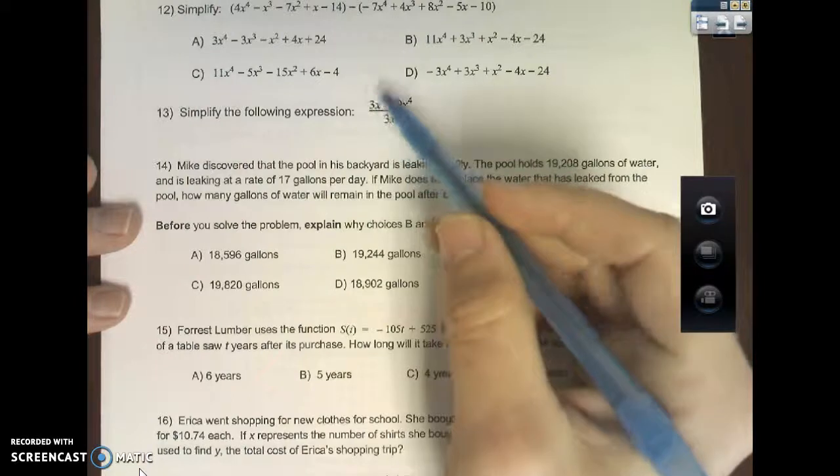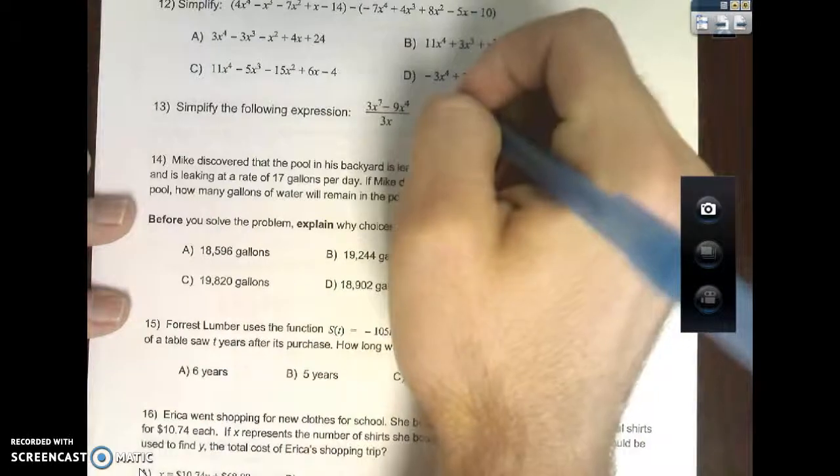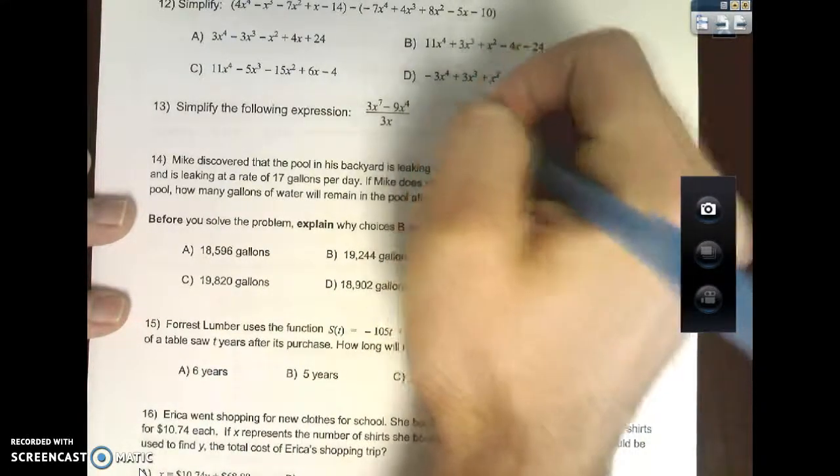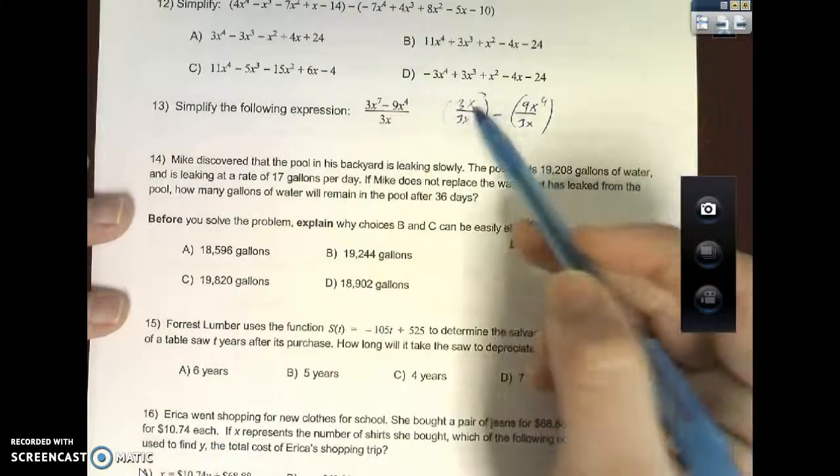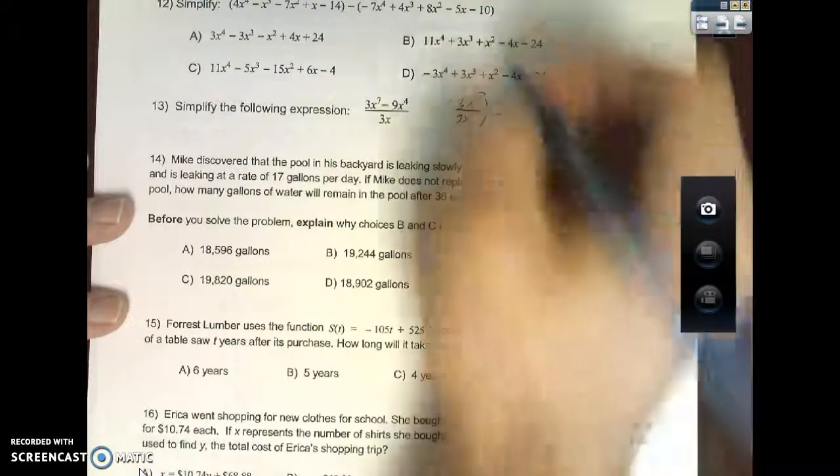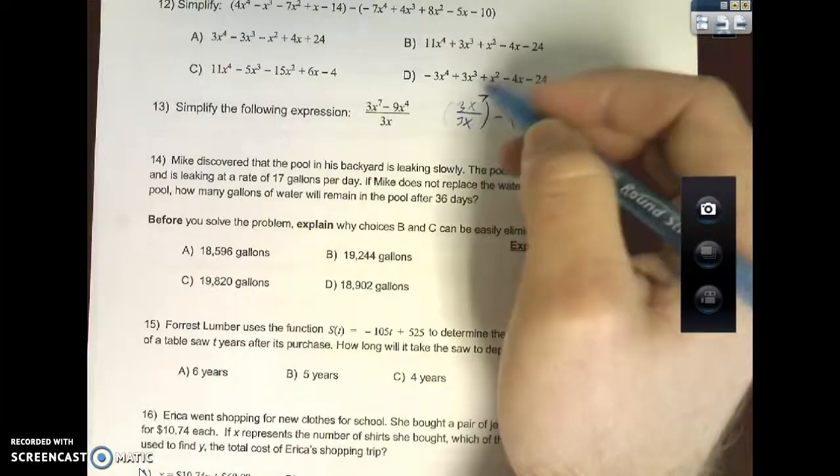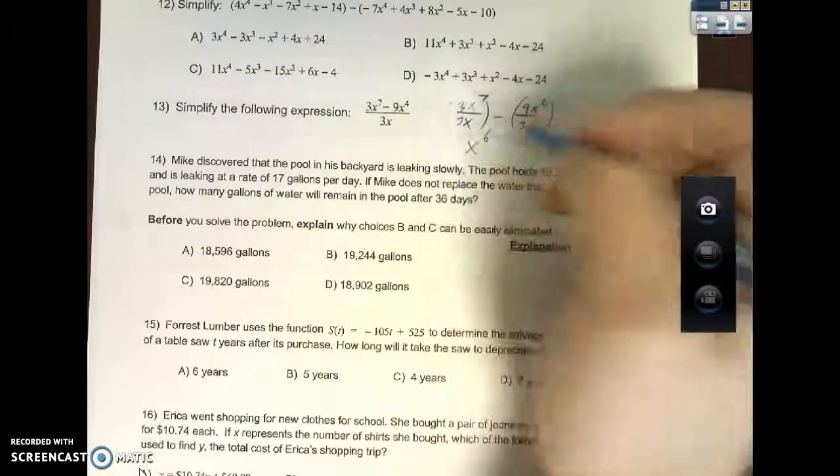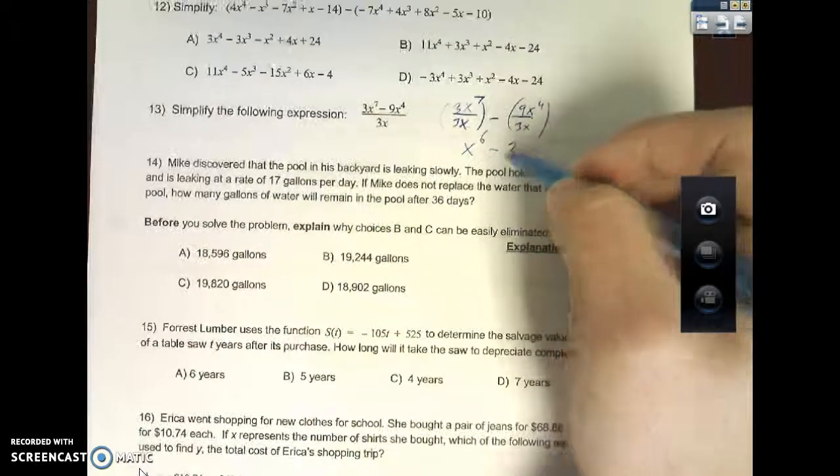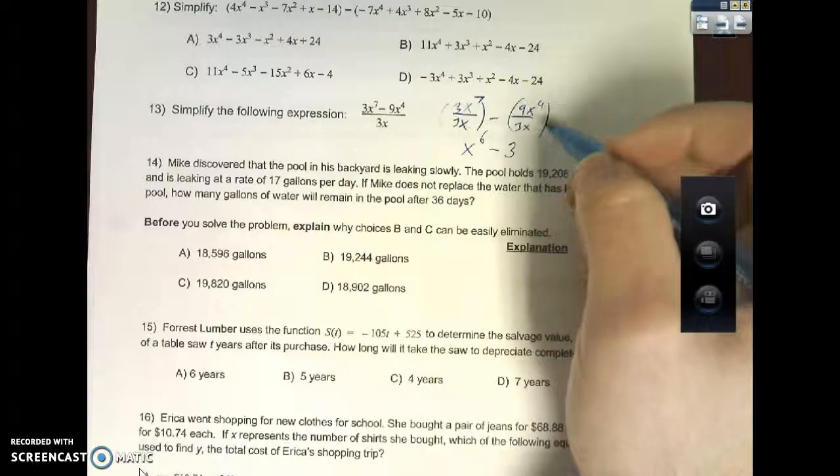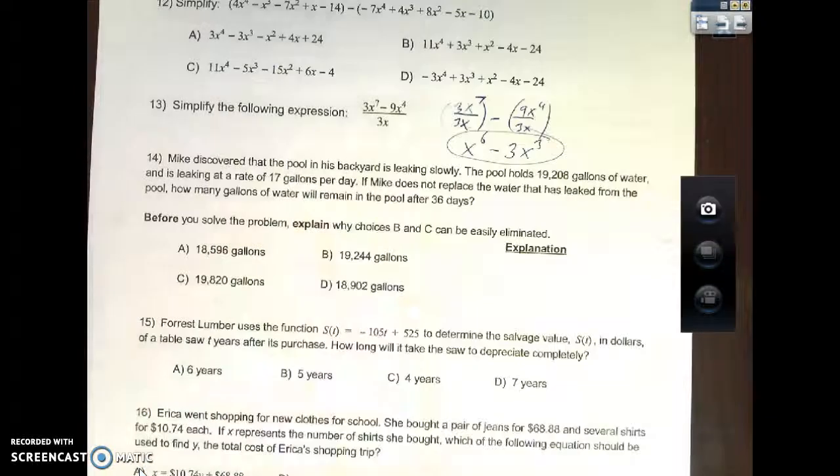Please note number 13, all three of these are divisible by the same number. Three can go into all three of them. So the way to rewrite this is as such: three divided by three is one. Now X to the seventh over X to the first, there's seven X's on top, one down low. I can take one away from each and I'm left with just X to the sixth. Then on the right, nine divided by three is three. X to the fourth over X is four over one, that's just X to the third.